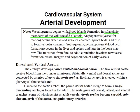Vessel formation begins with blood island development within splanchnic mesoderm of the yolk sac and the allantois. Later in development, blood formation will take place in the liver and the spleen and ultimately in bone marrow. The transition from fetal vessels to adult vessels involves the formation of new blood vessels, the merger of existing vessels, and ultimately the degeneration of many early vessels.